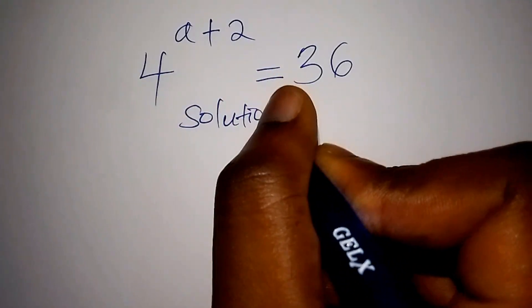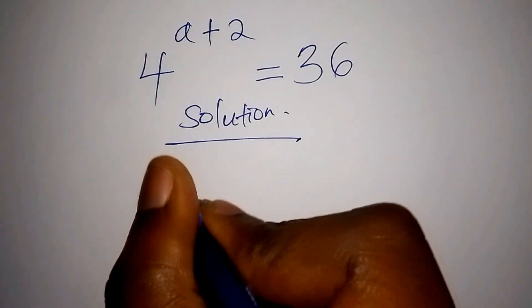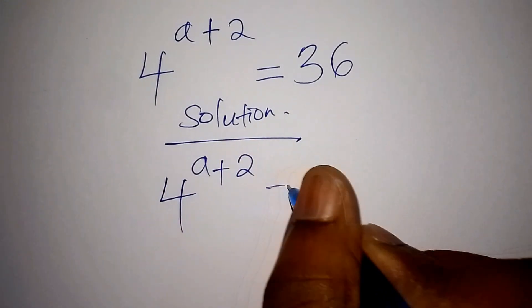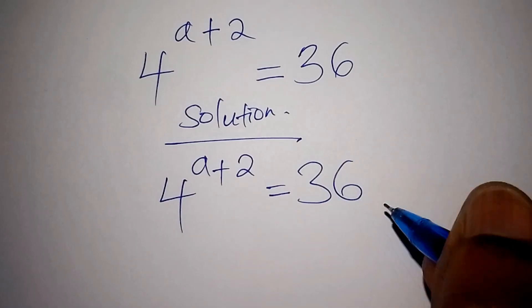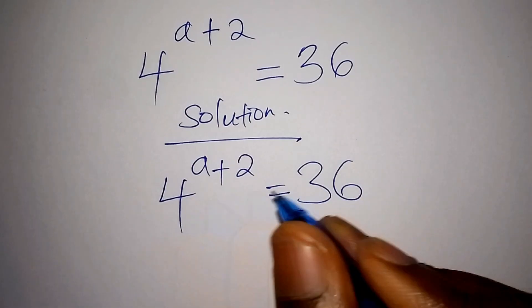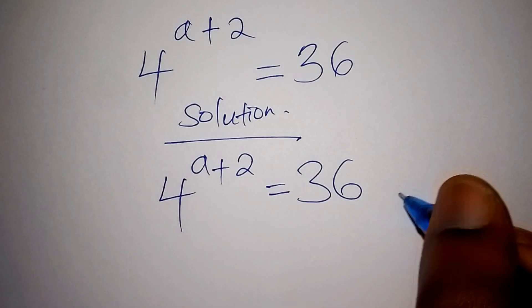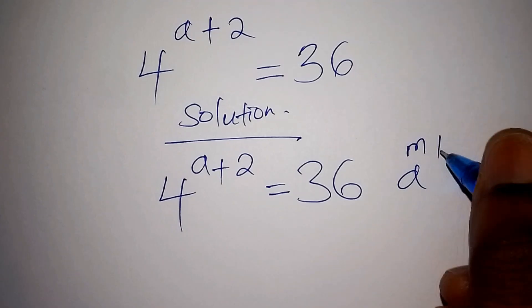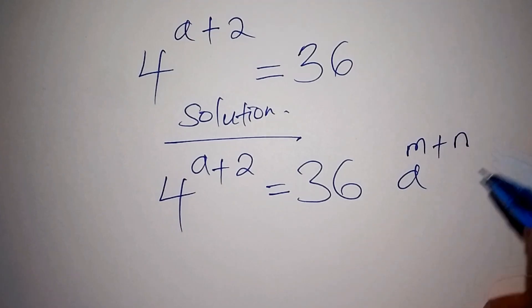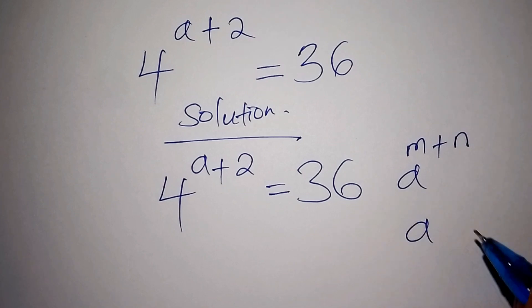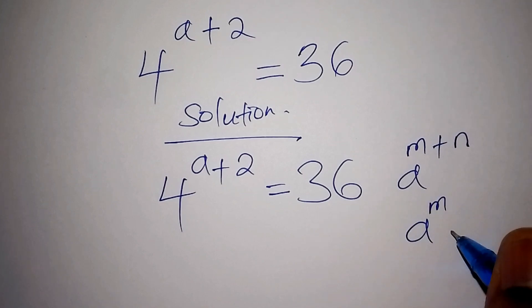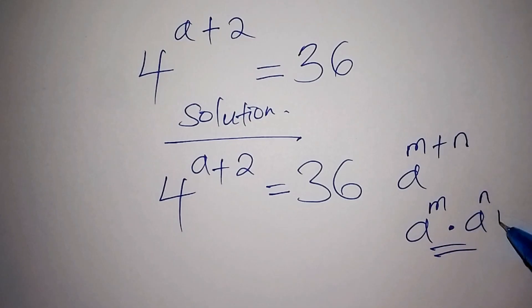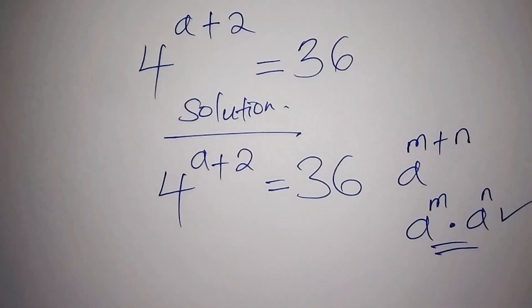So the maths problem we have is 4 to the power of a plus 2, equals 36. Now, to find the value for a, we recall that a to the power of m plus a to the power of n can also be written as a to the power of m multiplied by a to the power of n. This will form the basis of how we work out this problem.